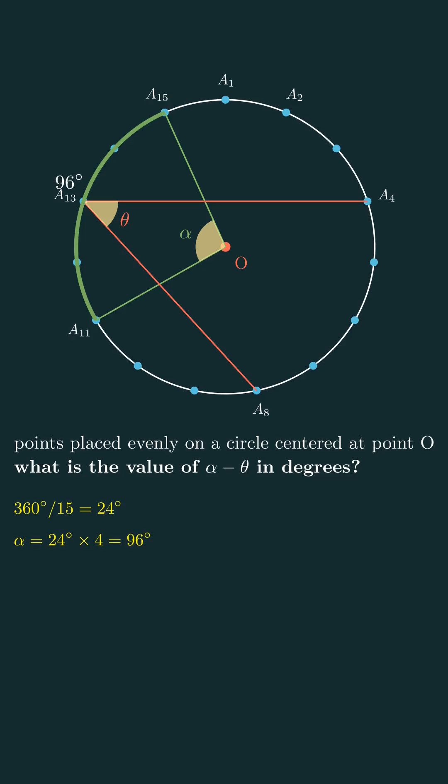On the other hand, theta is an external angle, and it also spans four small arcs, so the arc it sees is also 96 degrees. But external angles are half of the arc they see, which means theta is 48 degrees.